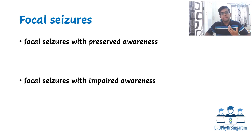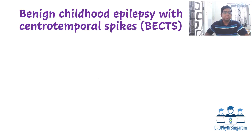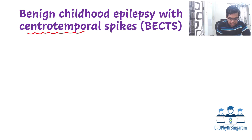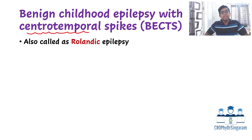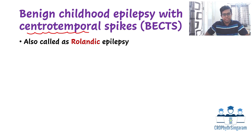The most common condition with focal seizures and epilepsy is BECTS — benign childhood epilepsy with centrotemporal spikes. As the name suggests, the seizure originates from the central part of the temporal lobes only. It was previously called Rolandic epilepsy. As the name itself suggests, it is a benign condition.